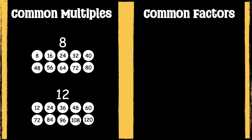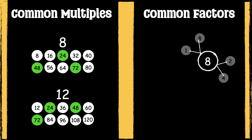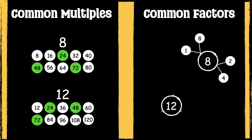The common multiples are 24, 48 and 72. Here are the factors of 8 and the factors of 12.